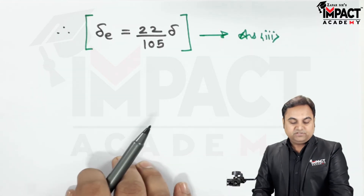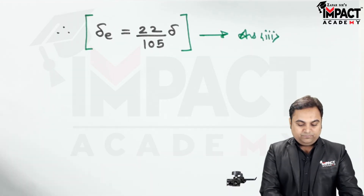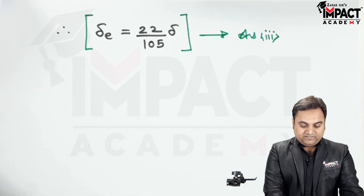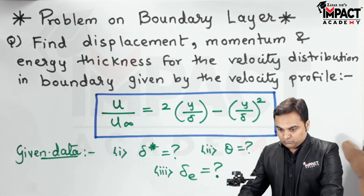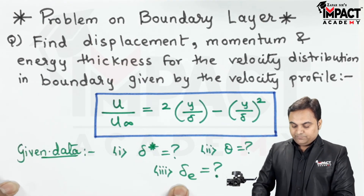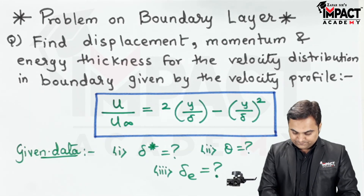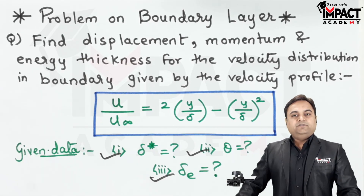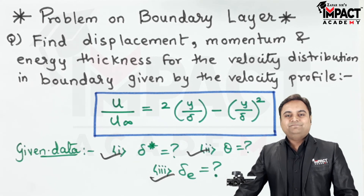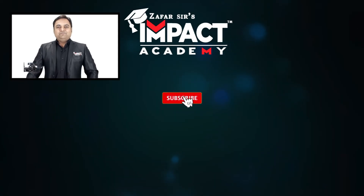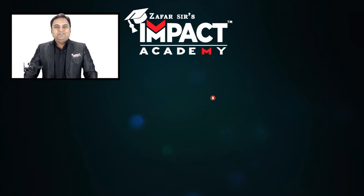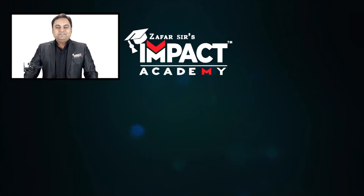All three questions have been answered: displacement thickness = δ/3, momentum thickness = 2δ/15, and energy thickness = 22δ/105. The problem is now complete. If you find the videos helpful, please like, share, comment, and subscribe to the channel.